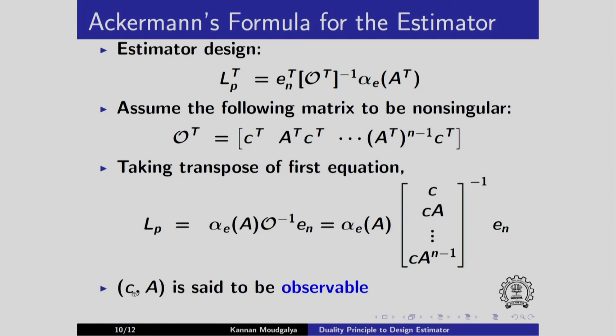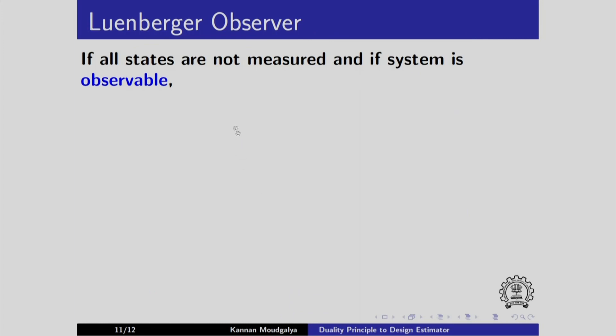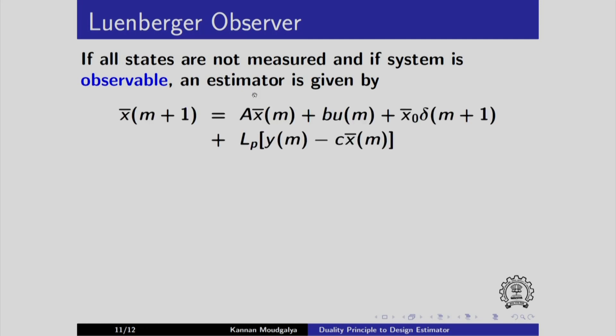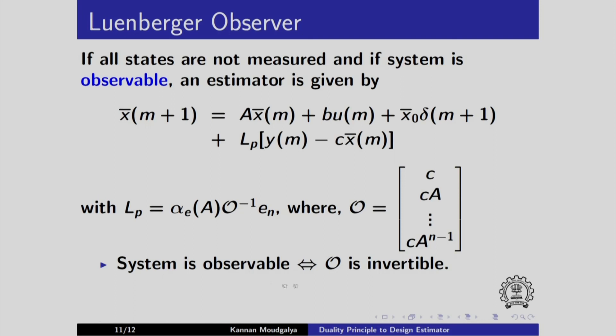When this inverse exists, we say that C comma A is observable. This is also known as the observability condition. If all states are not measured and if the system is observable, an estimator is given by this equation. This is what we used. It is from this, we obtained the error dynamics with Lp given by this equation, where the script O is given by this matrix. The system is observable if and only if script O is invertible. Another name for this estimator is Luenberger observer.